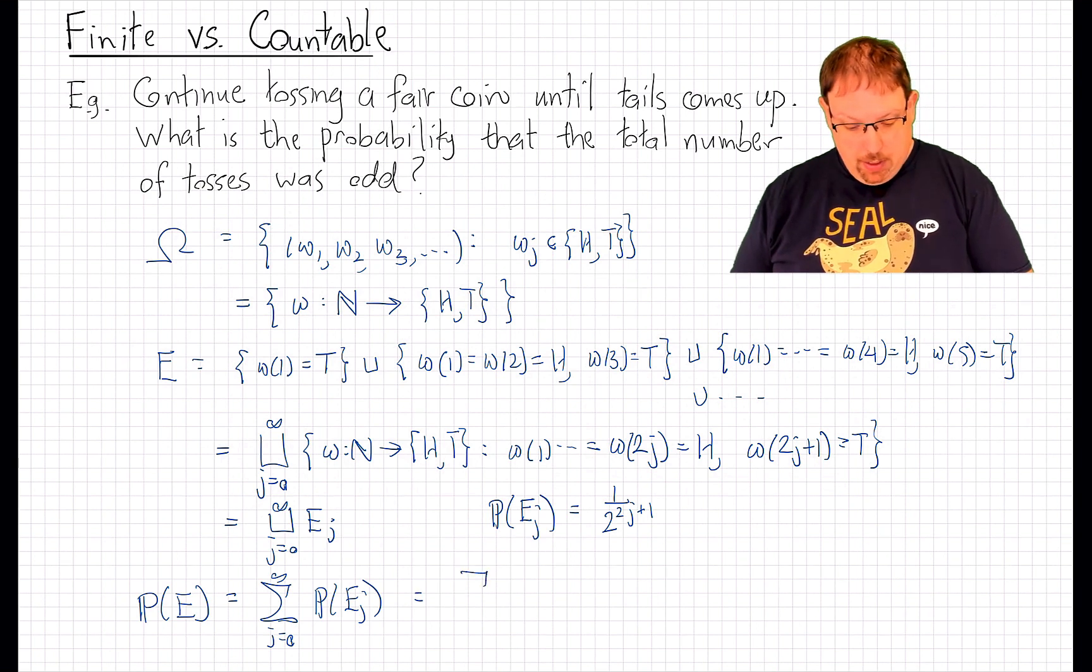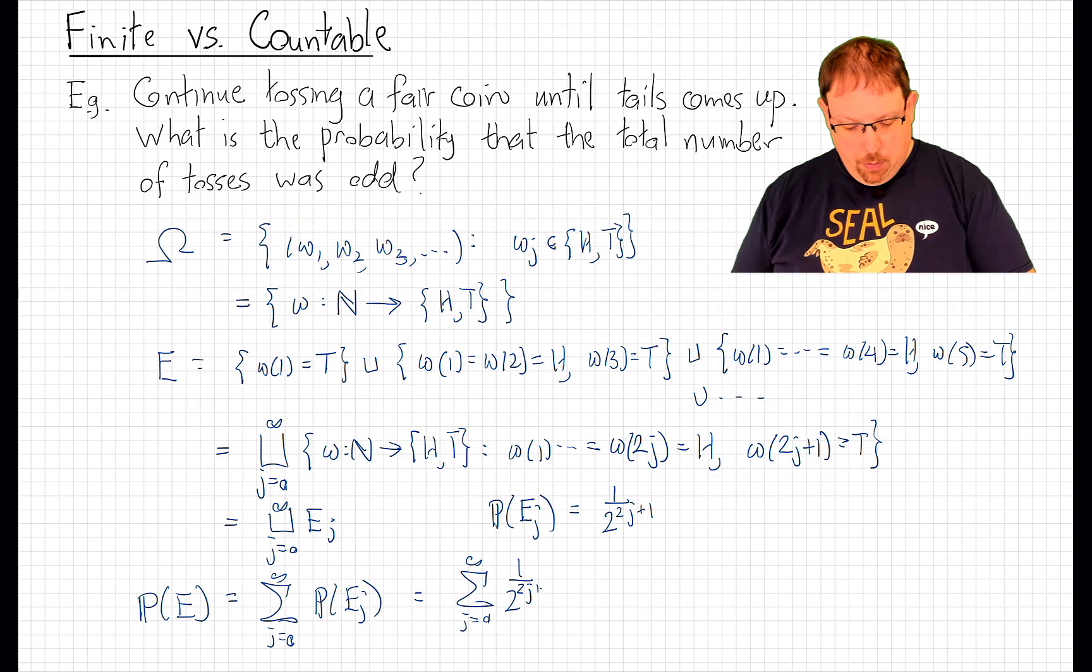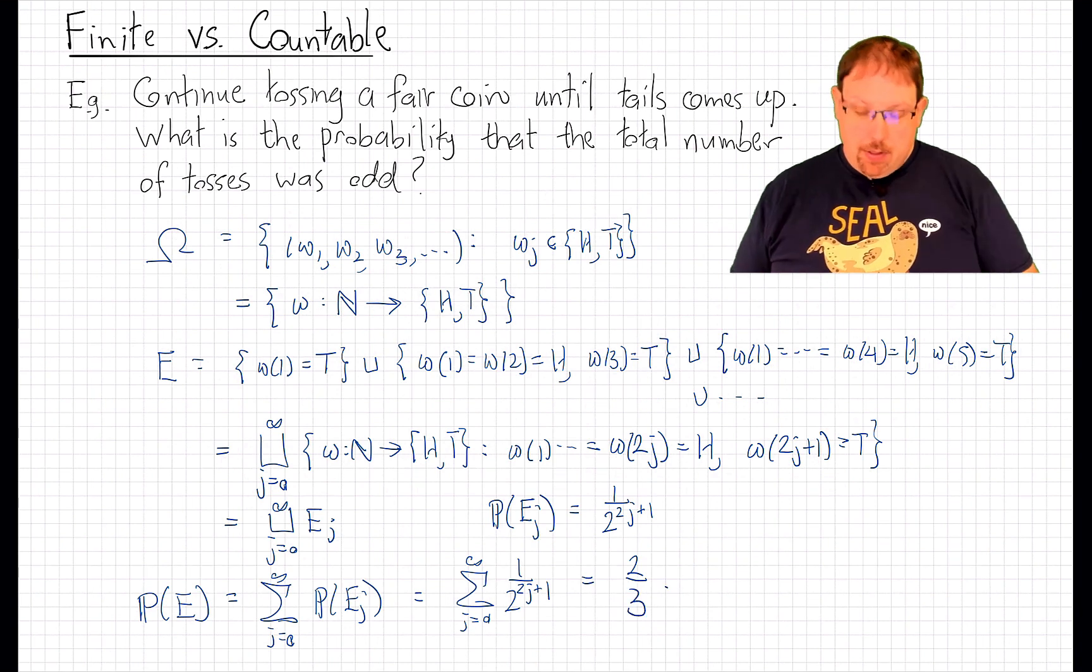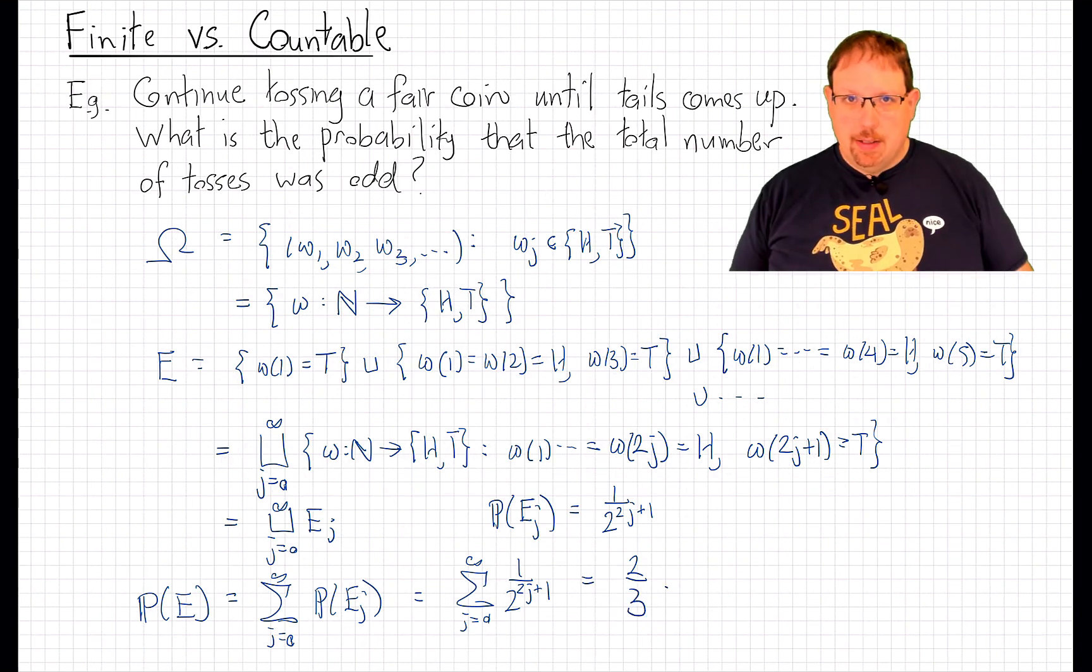then this probability should be the sum of the probabilities of those disjoint events in the union, which is the sum of 1 over 2^(2j+1), and if you work that out, you get 2/3.